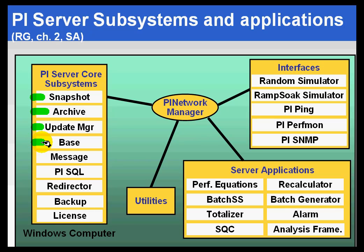The Base Subsystem is in control of the point database — creating points, etc. The Message Subsystem is simply a message logger. The PI SQL Subsystem is best described as an ODBC driver — it allows the PI Server to share its data with ODBC-compliant client applications like relational database clients, such as Crystal Reports. PI is not a relational database, but thanks to the PI SQL Subsystem, it can imitate one. The Redirector facilitates communication between COM connectors and external archives, such as third-party historians, and we can also get data from relational databases using COM connectors. Finally, we have a Backup Subsystem and a License Subsystem for handling those two functions.